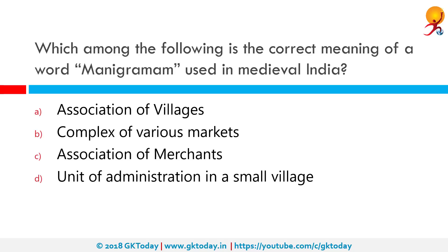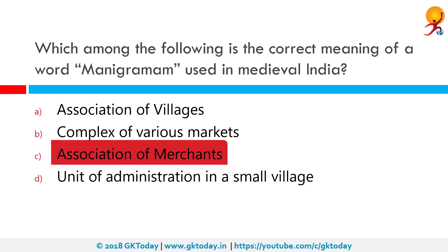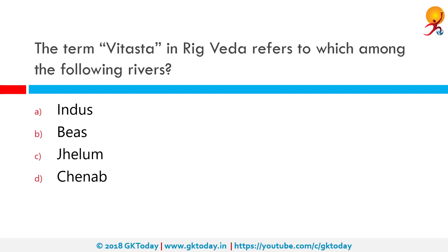They gradually flourished in Tamil Nadu in the Pallava and Chola periods and then became supra-regional in character by being active in Southeast Asia. The correct answer is Association of Merchants.